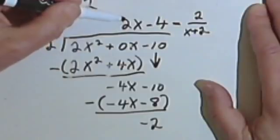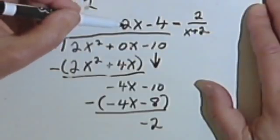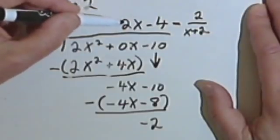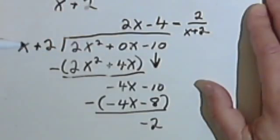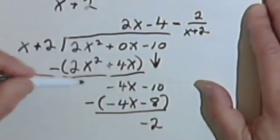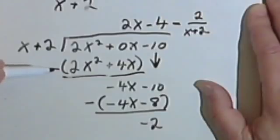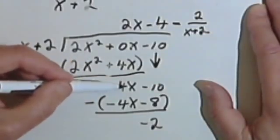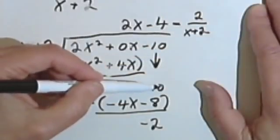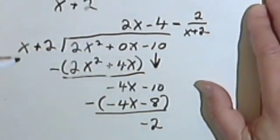Take whatever you get, write it up here where your answer is going to go, then multiply that answer, that 2x, times the whole divisor, you're distributing it. Then subtract. This is the most dangerous part. Be careful when you subtract because you're dealing with different signs. After you've subtracted, bring down the next term, start your process again.